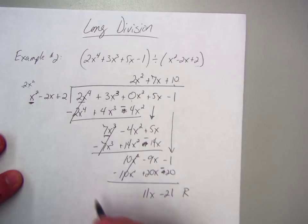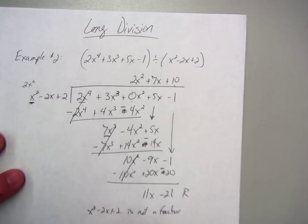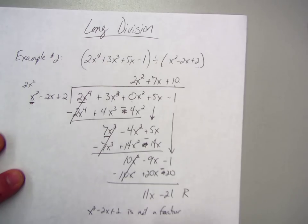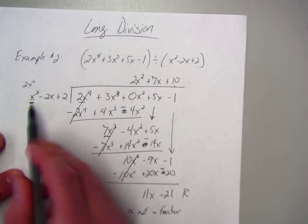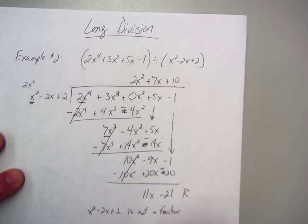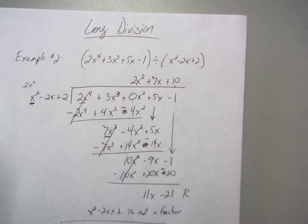So, since the remainder is not 0, that means x squared minus 2x plus 2 is not a factor. And to write my solution, I write it as 2x squared plus 7x plus 10 plus the remainder 11x minus 21 over what you divided by, x squared minus 2x plus 2. And there you go.